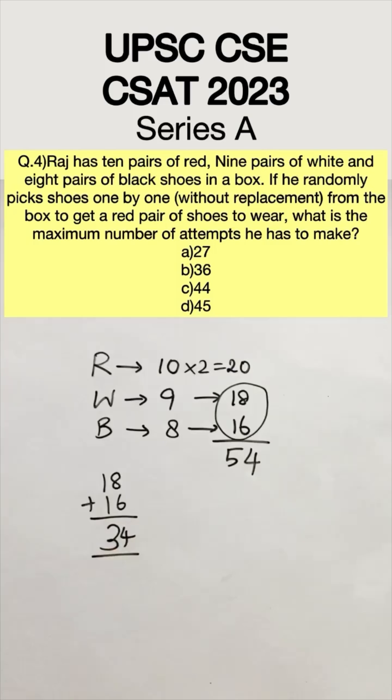So we are going to assume that we are unlucky enough to pick all the left shoes first. So from 35 to 44 it's going to be left shoes and the 45th shoe would be a right shoe. Which means we need a maximum of 45 attempts.